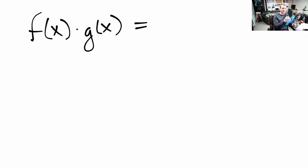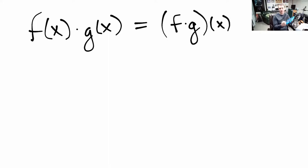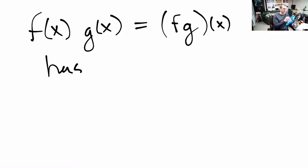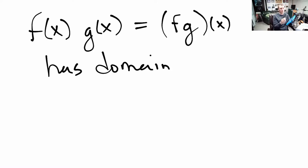The next operation is multiplying two functions together: f of x times g of x. Commonly there's no dot written — it's just f times g with nothing in between, meaning the product of the two functions. For the domain, we pick an input and plug it into both functions and multiply, so we need to be able to evaluate it for each function. The input needs to be in both domains again.